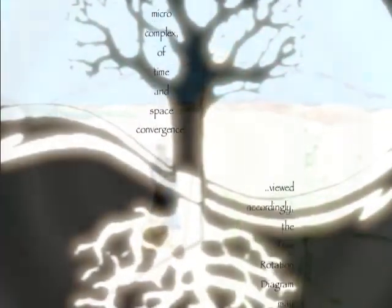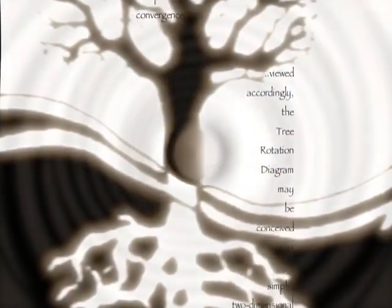Viewed accordingly, the tree rotation diagram may be conceived as a simple two-dimensional chart, while simultaneously a complex, multidimensional map of the universe.